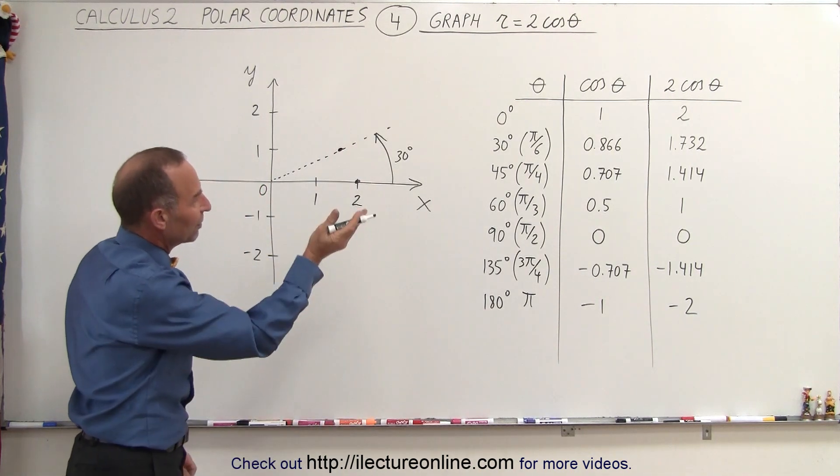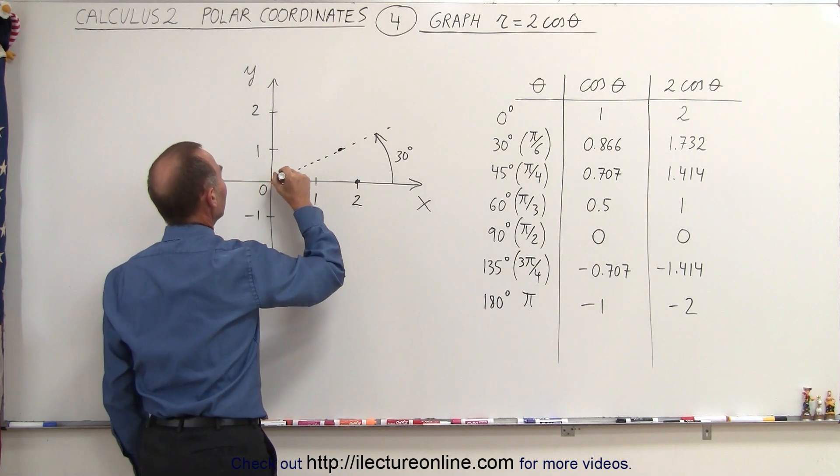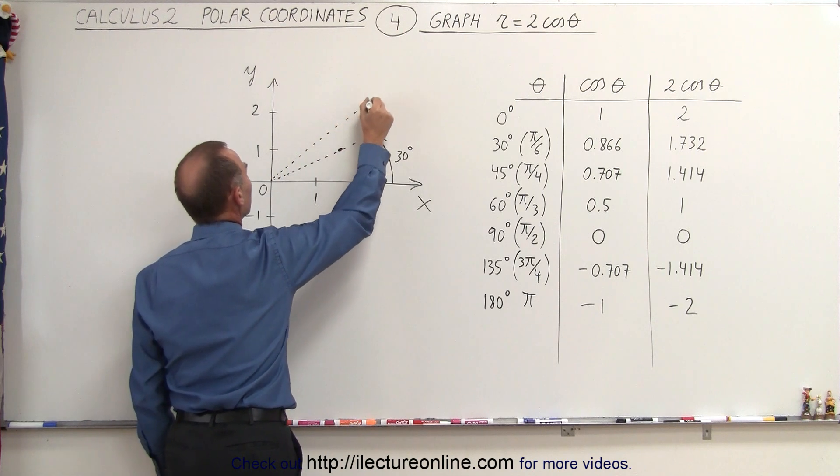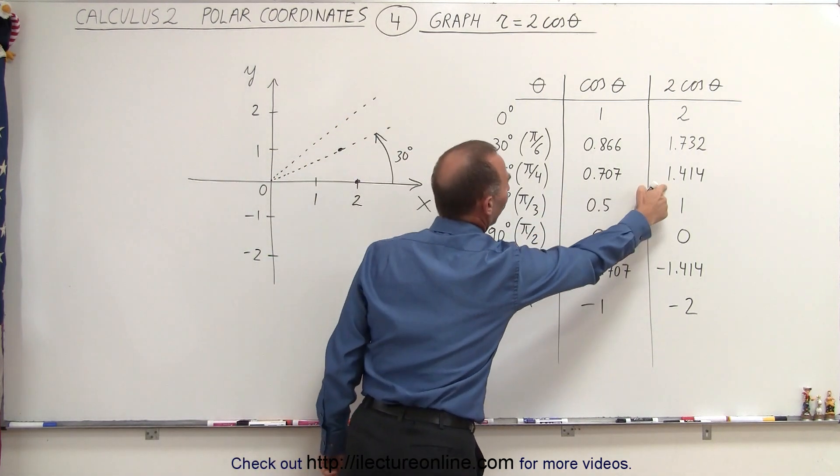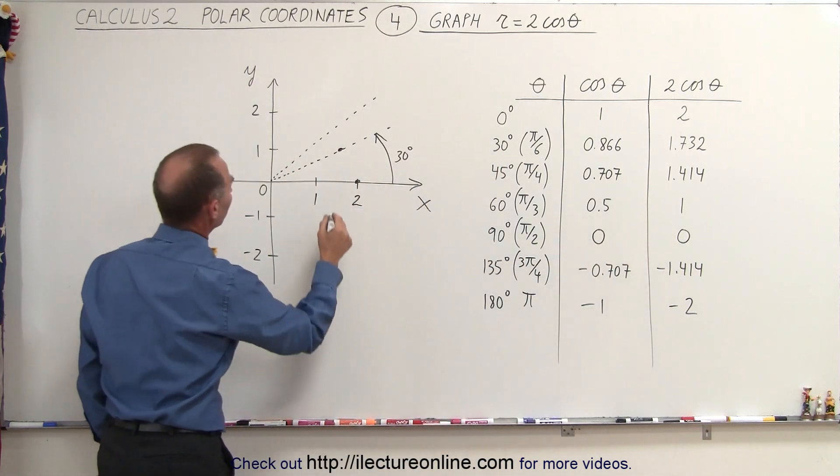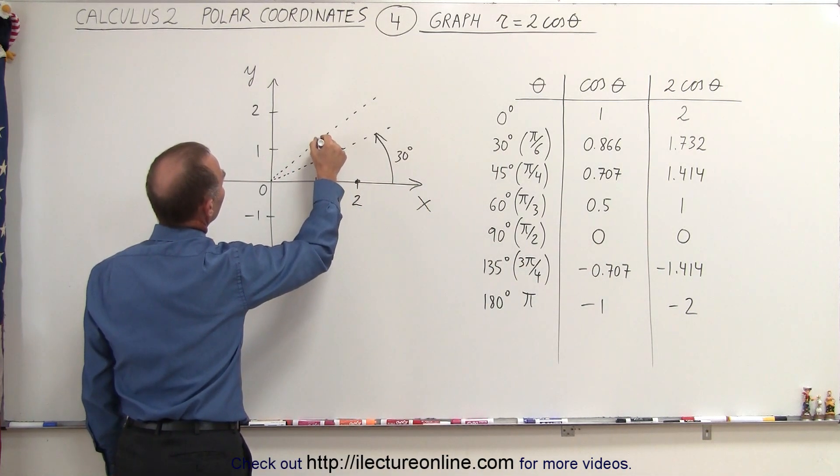Then we move another 15 degrees at an angle of 45 degrees. And at that angle, we see that the cosine is 0.707, or twice that, is 1.414. So that puts us right about here.